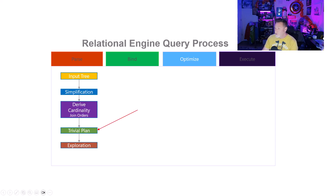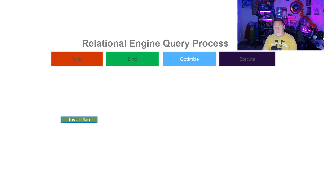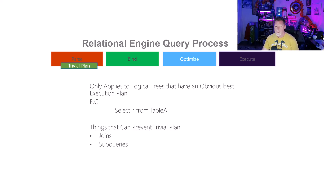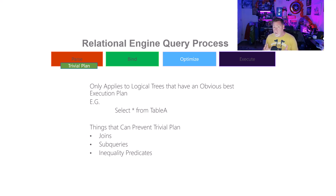Now we get to trivial plan — the simplest part of optimization. It only applies to logical trees that have an obvious best execution plan, things like SELECT * FROM table A. There's only one way we're going to solve this: a full table scan. Some things that can prevent trivial plans are joins, subqueries, and inequality predicates. That doesn't mean they're bad — it just means that if we make the query complex, we're going to leave the trivial plan space. That's okay. Sometimes I need joins, subqueries, or inequality predicates.